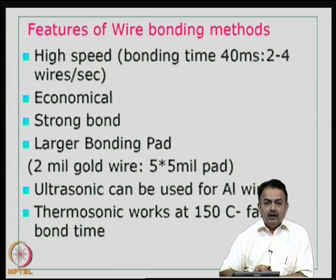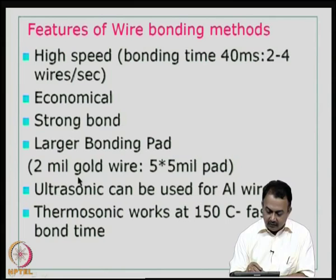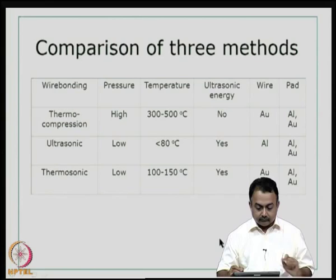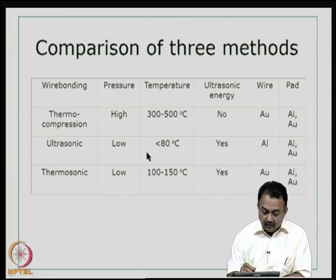The bonding pad area depends on what type of material you are using. If it is a wedge bond you require more area; if it is a ball and stitch bond, you do not require that much area. For example, if it is a 2 mil gold wire — 1 mil is 25 microns — then you have to use about a 5 by 5 mil pad to establish a reliable connection. Ultrasonic bonding can be used for aluminum wires and thermosonic works at 150 degrees centigrade with faster bonding time. You have seen thermocompression bonding, ultrasonic bonding, and thermosonic bonding. In thermocompression bonding, the pressure used is high and temperatures are between 300 and 500 degrees centigrade; if you use ultrasonic it can be much less. The wires used for thermocompression bonding are typically gold and for ultrasonic it is aluminum; for thermosonic it is gold.